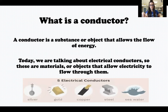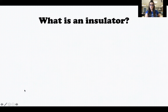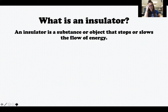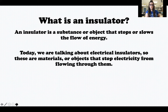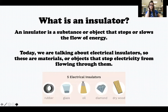What is an insulator? An insulator is a substance or object that stops or slows the flow of energy — it's the opposite of a conductor. Today we are talking about electrical insulators: materials or objects that stop electricity from flowing through them. Some examples are rubber, glass, oil, diamond, and dry wood.